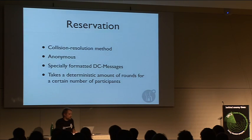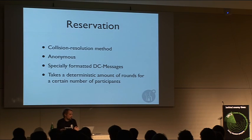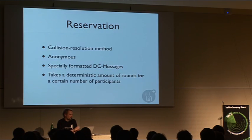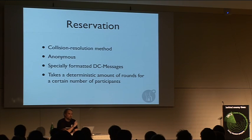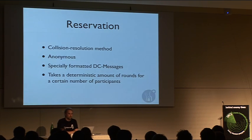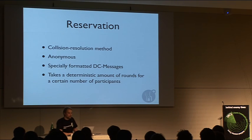There are different methods to do a reservation. The one I chose in my implementation is called the collision resolution method. It is anonymous and works by sending specially formatted DC messages to the DC service and observing the result. By doing this several times in a row, you can determine when it's your turn to send. It takes a deterministic number of rounds for a given number of participants to find out the order of the sending process.